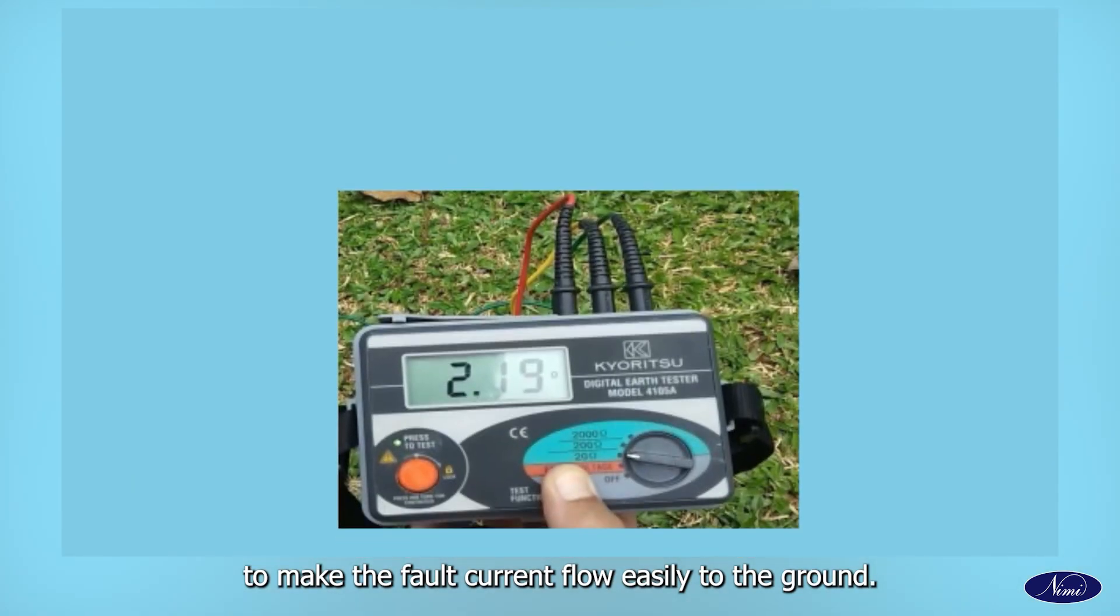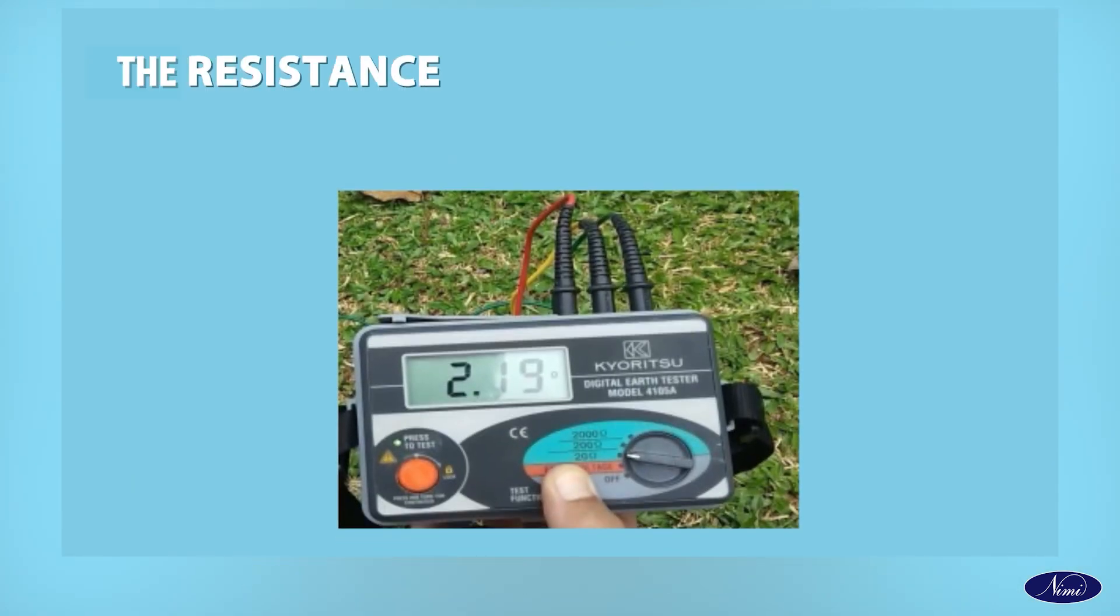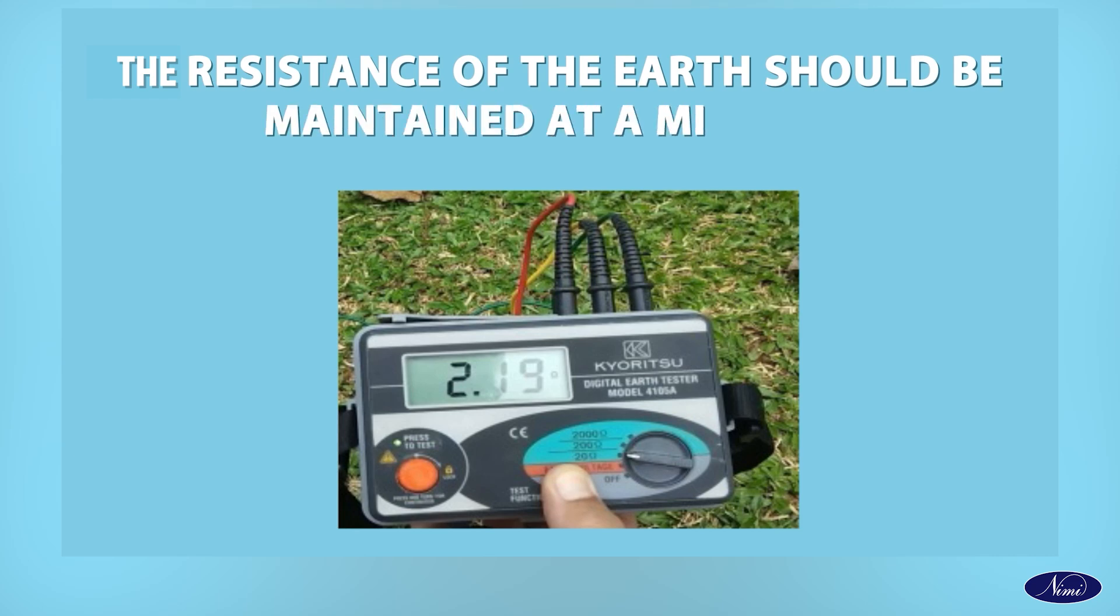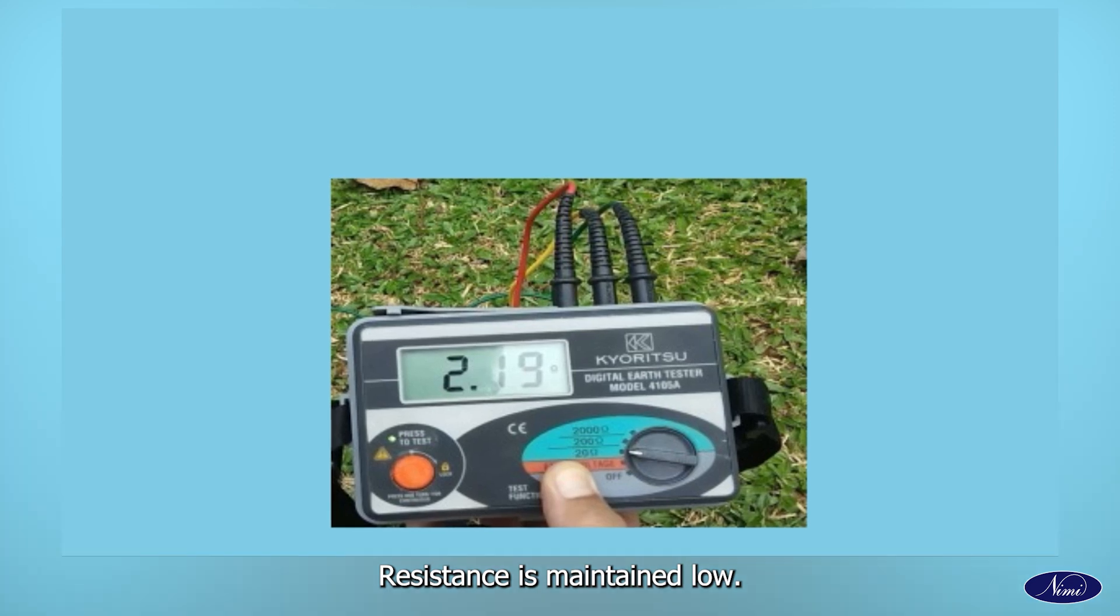To make the fault current flow easily to the ground, the resistance of the Earth should be maintained at a minimum and it has to be frequently checked that the Earth Resistance is maintained low.